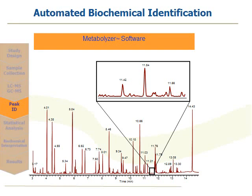I just want to point out that a lot of times in the field, you'll hear people quoting we detected thousands and thousands of ion features. It's important to understand that an ion feature does not equal a metabolite, because of this redundancy — the number of different ions that every single molecule can produce. We found through our analysis that every molecule produces on average about seven ions in an actual experimental sample. So just be careful when somebody quotes that they detect thousands of ion features. That doesn't mean thousands of metabolites — that means hundreds of metabolites, probably, but certainly not thousands.